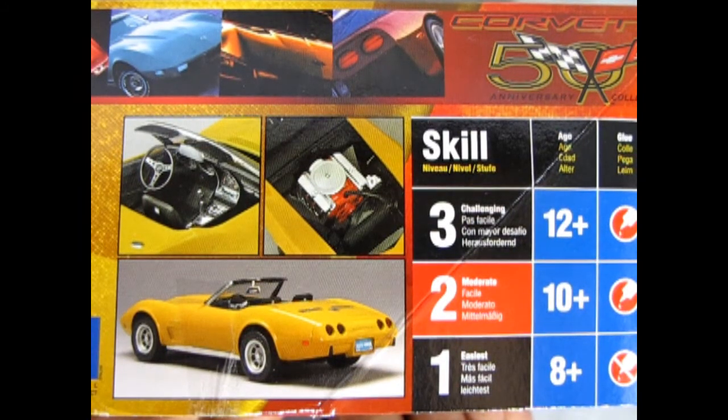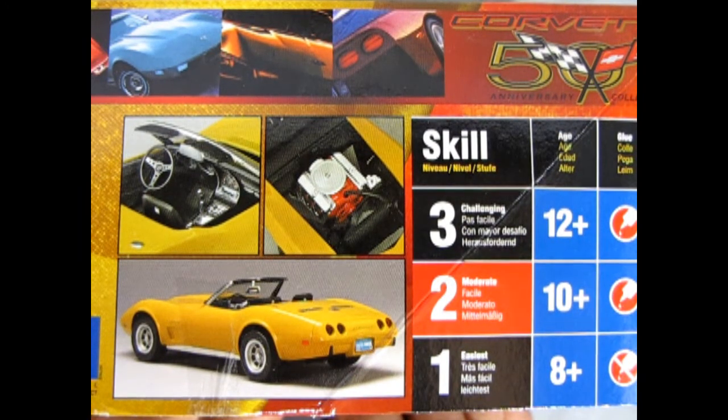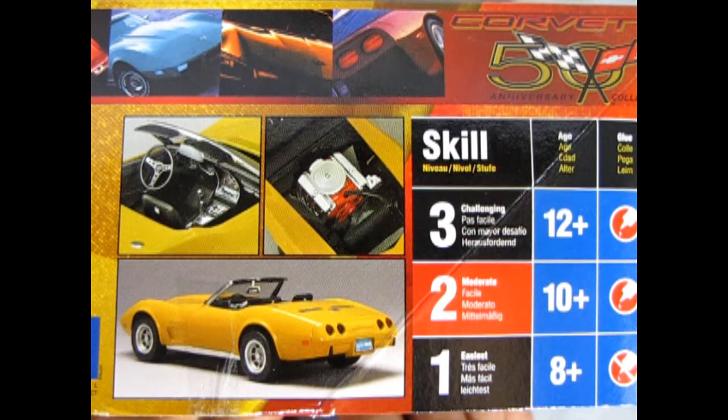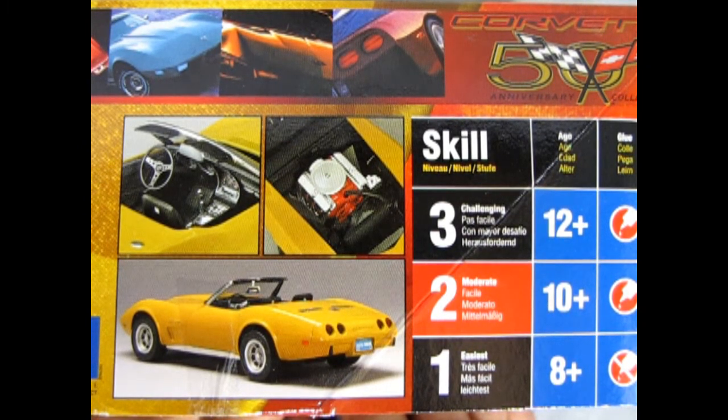The AMT Ertl 1975 Corvette convertible kit is a skill level 2 model which is intended for ages 10 and up and requires paint and glue to assemble.